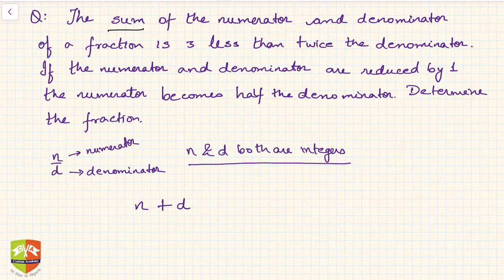Sum is—the moment you say is, that means it is equal to 3 less than twice the denominator. So 3 is less than something, that means minus 3, twice the denominator, so 2d. So 3 less than twice the denominator is sum of the numerator and denominator. Let us simplify this first equation. You will get d minus n, 2d minus d, and n goes on the right hand side. Then bringing it all on the left hand side, you will get d minus n equals 3.